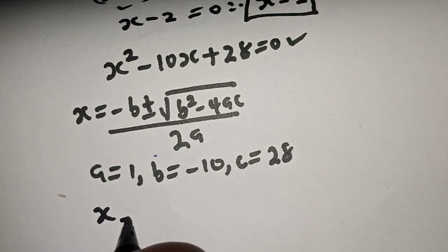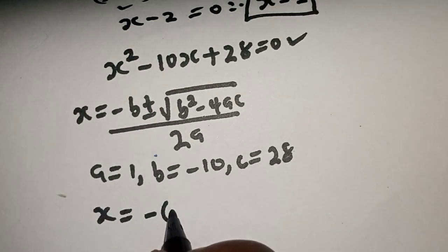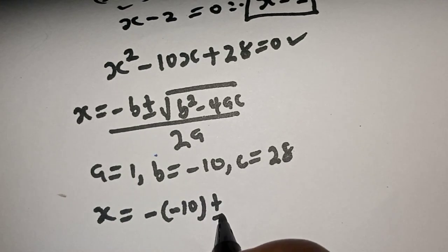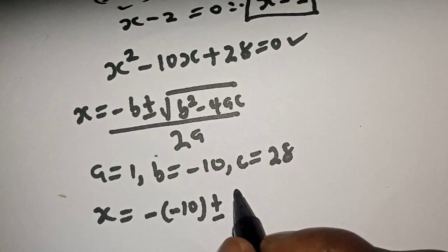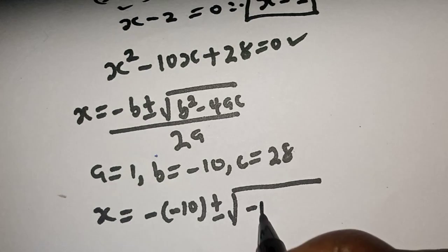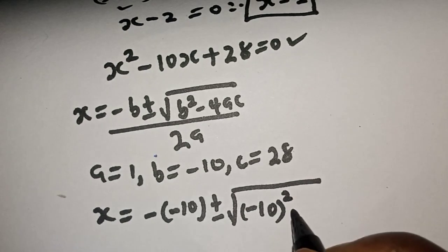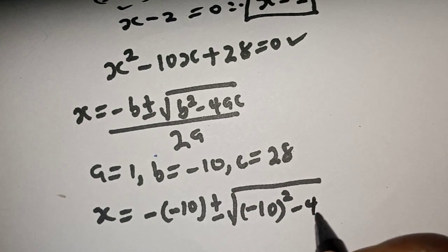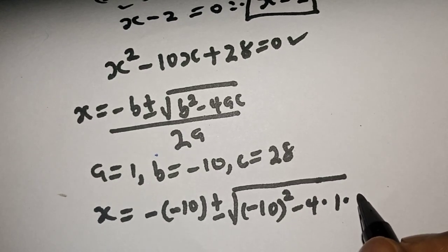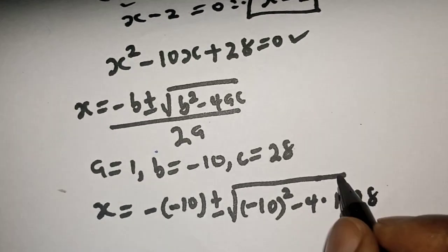So, x is equal to minus of minus 10, plus or minus square root of minus 10 squared minus 4 multiplied by 1 multiplied by 28, all over 2 times 1.